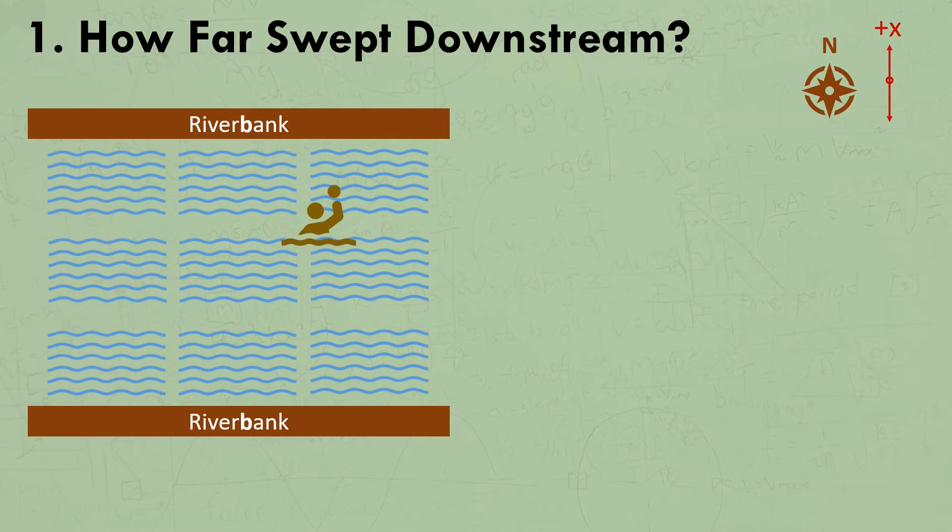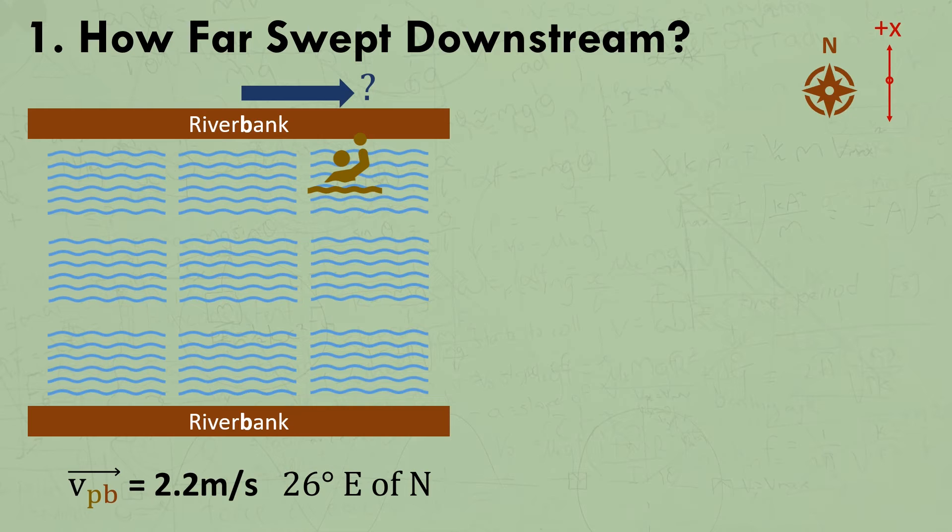The next question asks how far the student will be swept downstream while she swims across the river. Many students choose to use her velocity relative to the bank for this calculation, perhaps because we just calculated it, and perhaps because it kind of feels like the real velocity, as we're used to using the ground as our own kind of internal reference frame.